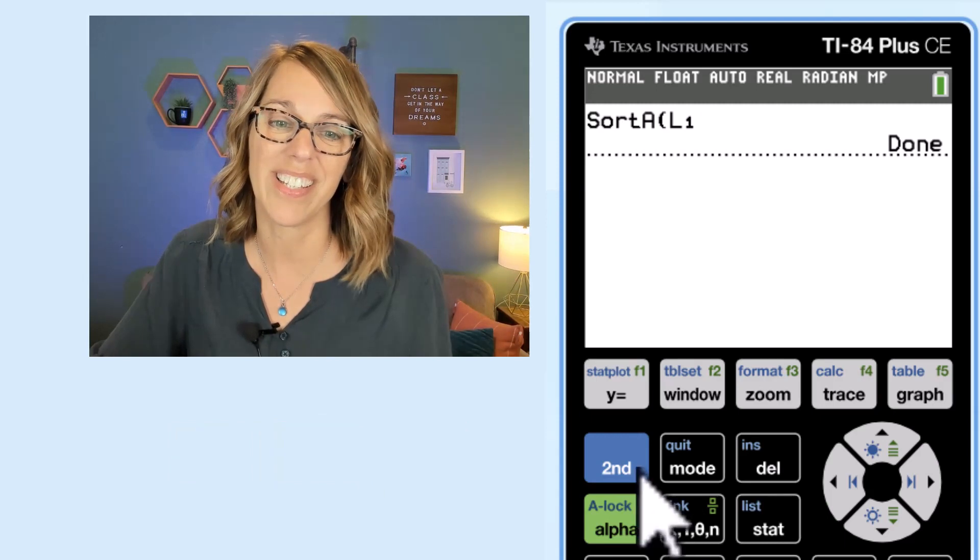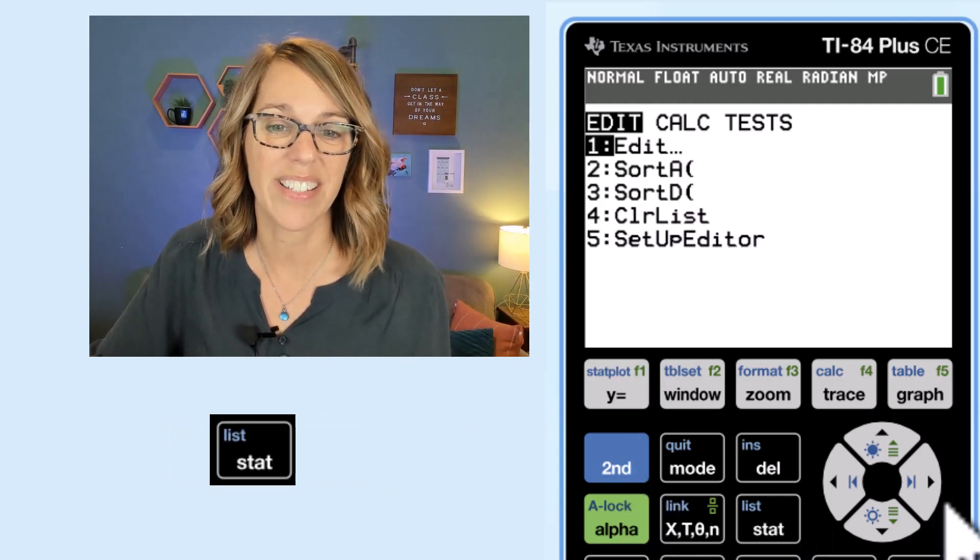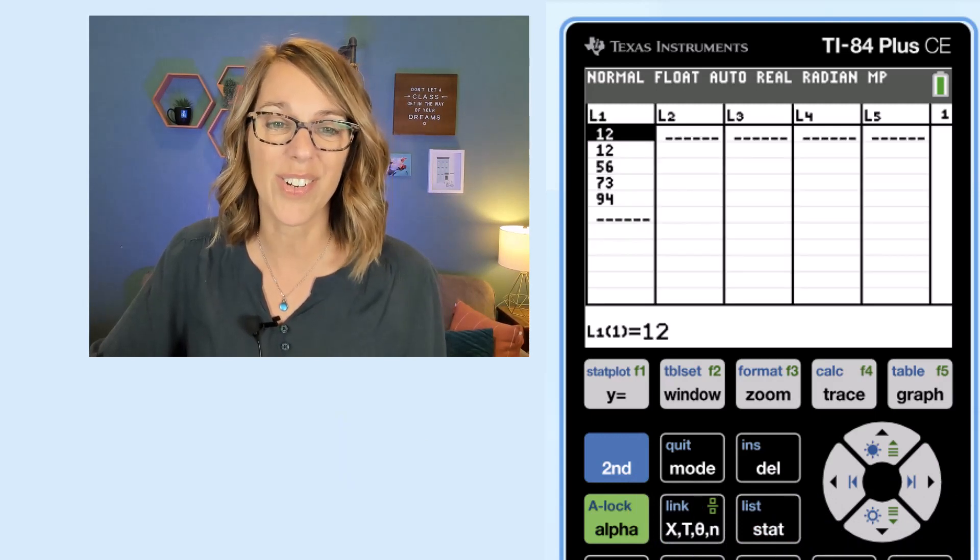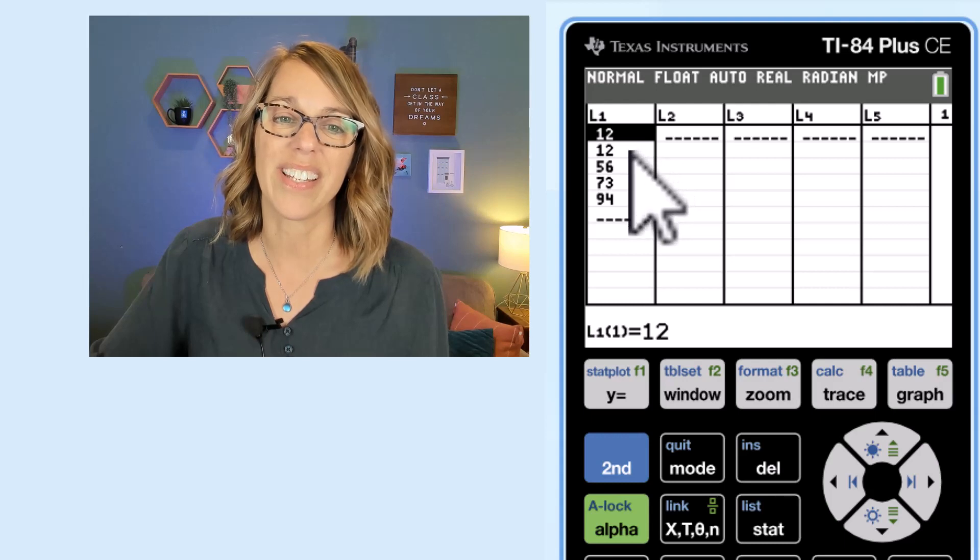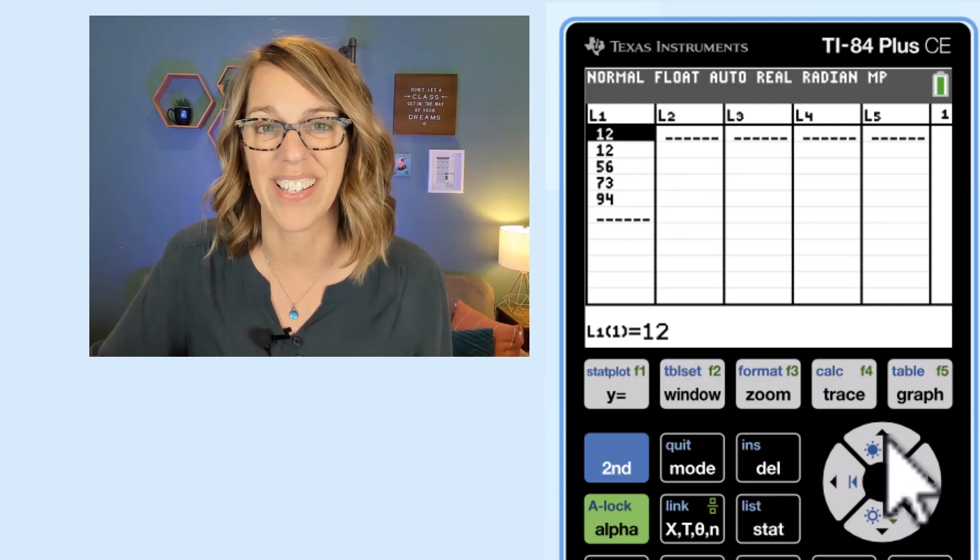Let's go ahead and view our list so we can see the order. I'm going to go back into my stat menu, so stats, and then edit allows me to view my data, and then enter. And I've got my data here in order and I can see that 12 is listed twice so our mode is 12.